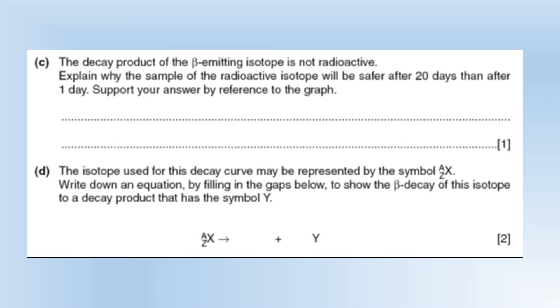So the decay product is not radioactive. Explain why the sample of radioactive isotope will be safer after 20 days than after 1 day. Support your answer by referring to the graph. So at 20 days the activity is around about 2-3%, something like that. Whereas after 1 day it's 85.